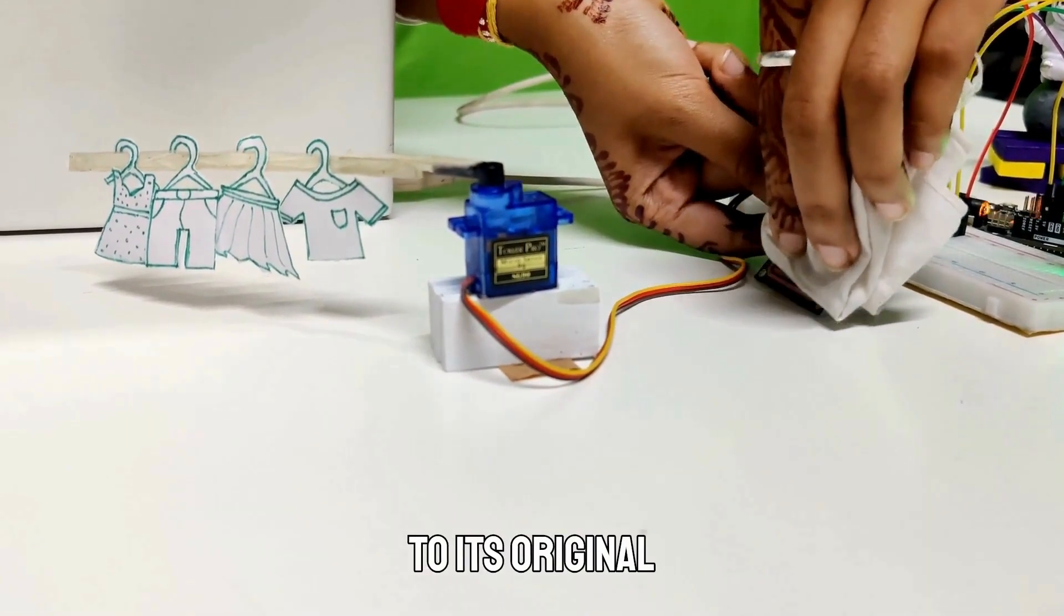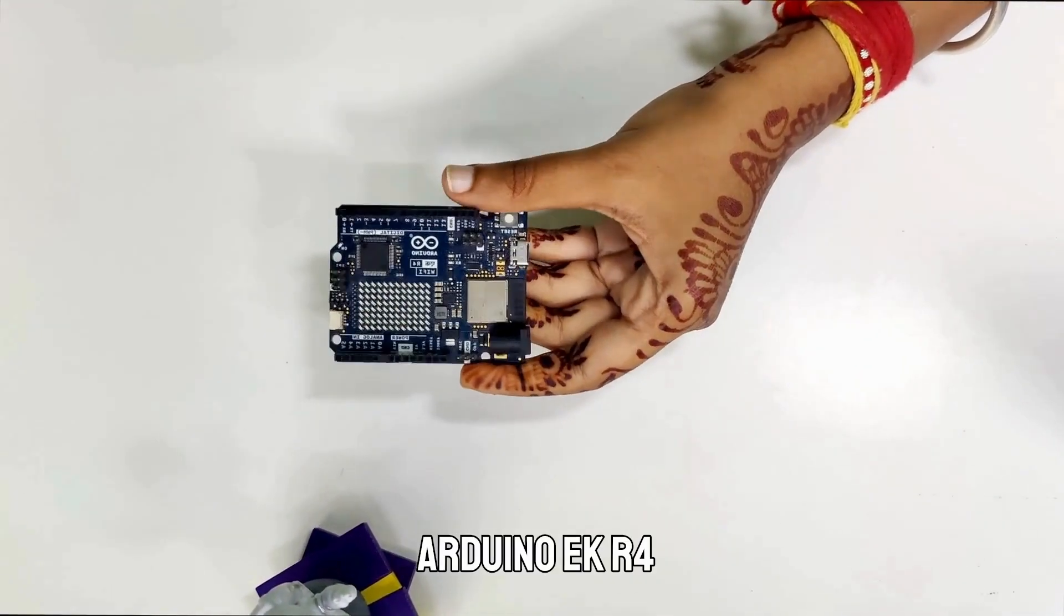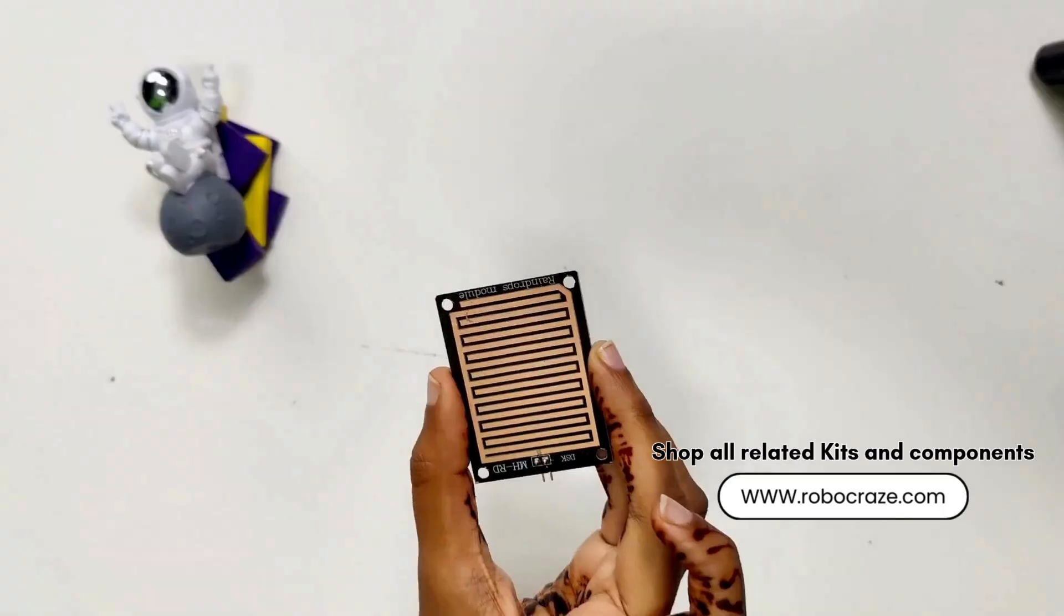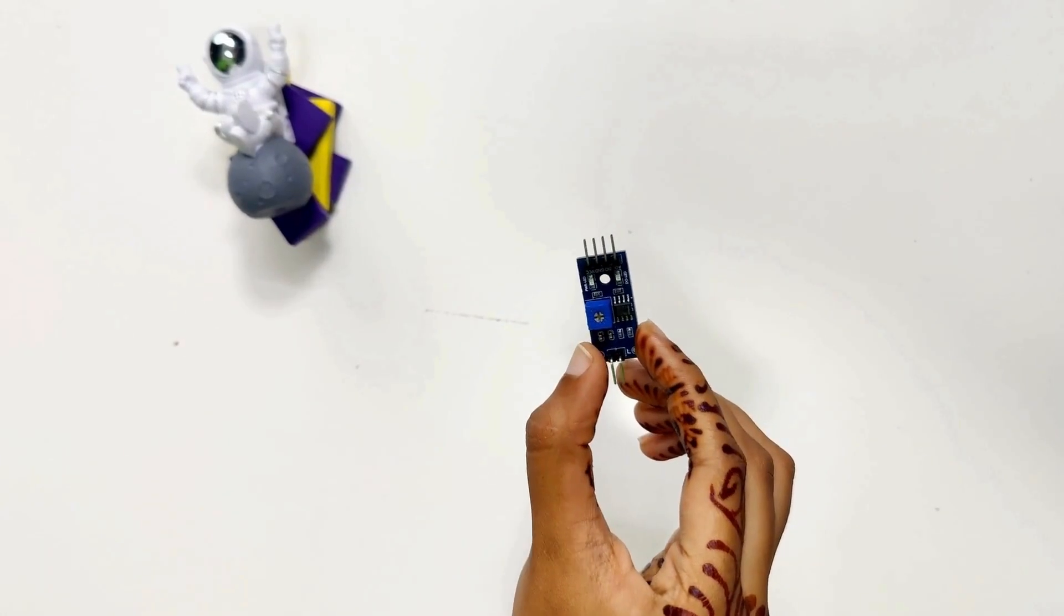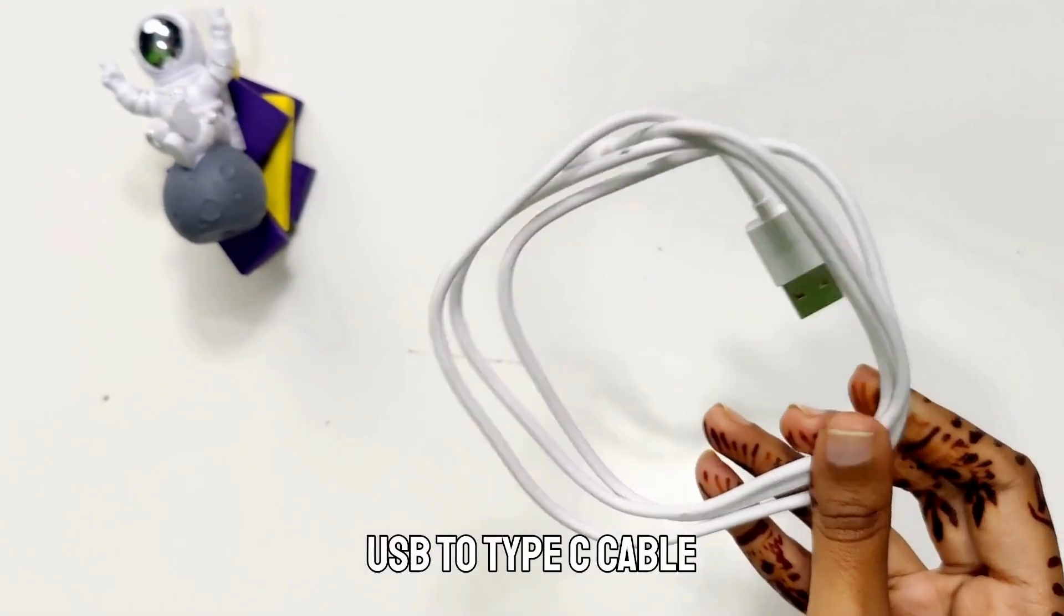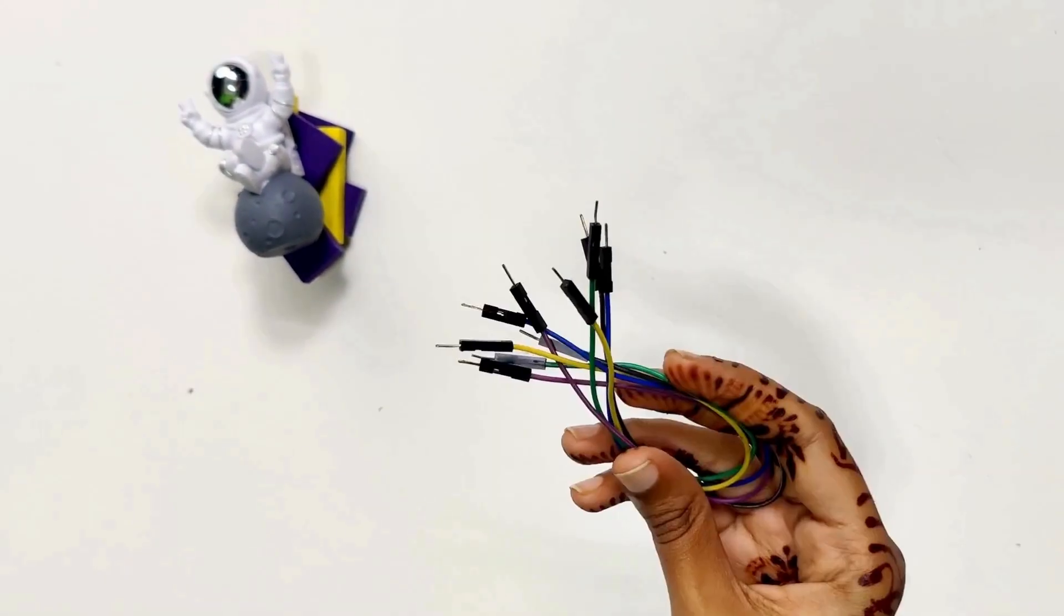For this project, we will be using Arduino ACAR4, a raindrop sensor module, a servo motor, USB to type C cable, breadboard and jumper wires. Now let's set it up.